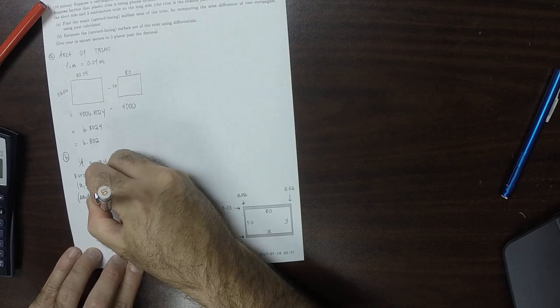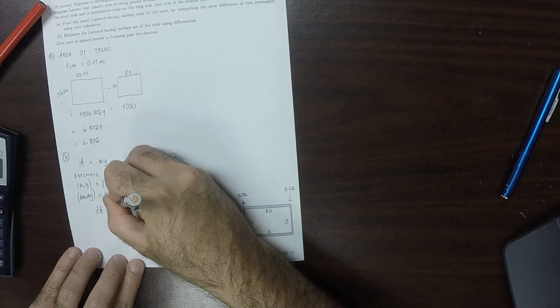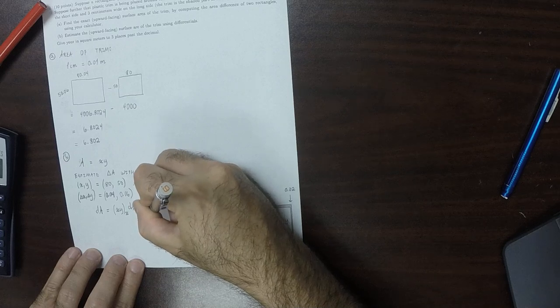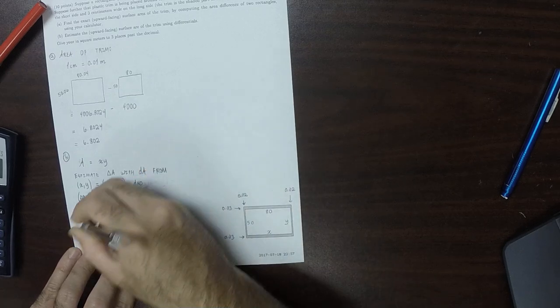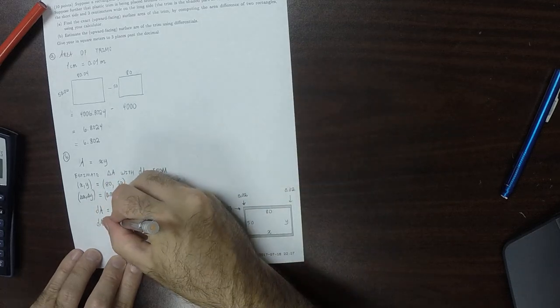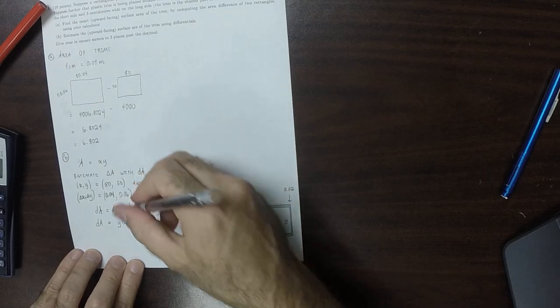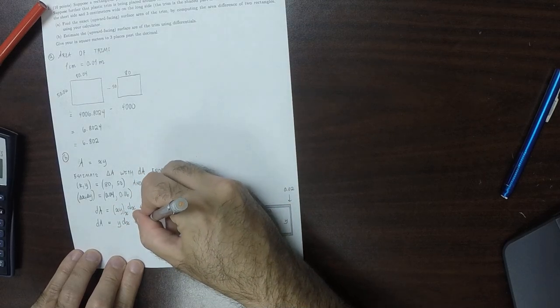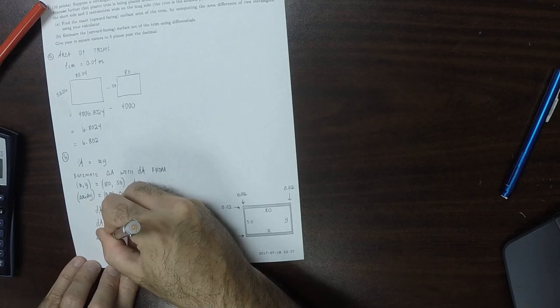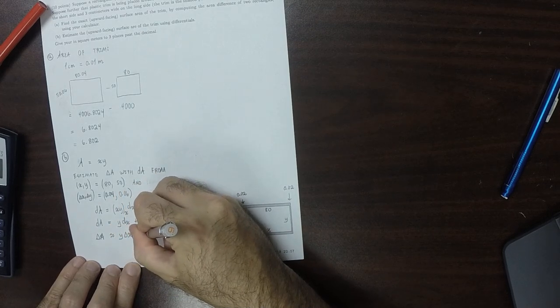So da, well that's partial a partial x dx plus partial a partial y dy, which is y dx plus x dy. Then delta a is approximately y delta x plus x delta y.